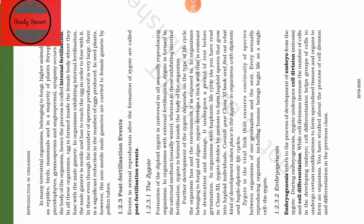The number of eggs produced is less in number. In seed plants, non-motile male gametes are carried to female gametes by pollen tubes. Pollen tubes show the path for pollen grains to come to the ovule or seed. These are the post-fertilization events — the events that occur after fertilization.